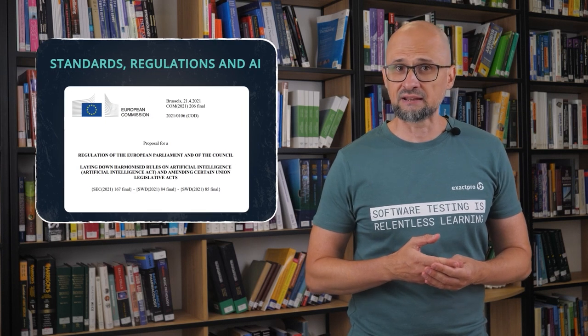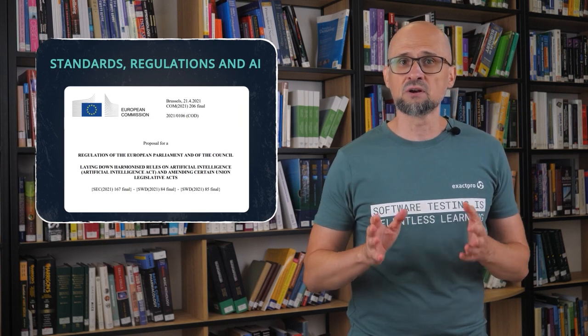The proposal of the European Parliament and of the Council focuses on harmonized rules of AI, stating that this is a fast evolving family of technologies that can bring a wide array of economic and societal benefits across the entire spectrum of industries and social activities that could provide competitive advantages to companies and the economy. In noting so, it outlined the following AI technologies and approaches: machine learning approaches, including supervised learning, unsupervised learning, reinforcement learning, and deep learning. Logic and knowledge-based approaches, including knowledge representation, inductive programming, knowledge bases, inference and deductive engines, symbolic reasoning, and expert systems. Statistical approaches, Bayesian estimation, search and optimization methods.